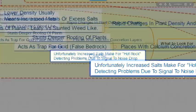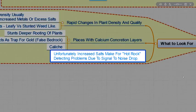Unfortunately, increased salts make for hot rocks and detecting problems due to their signal-to-noise drop. So basically you're seeing more and more noise from the reflections from all of that conductive rock material that has all those salts on it. And then the moisture with the salt combines and forms a little eddy current loop that looks an awful lot like metal.